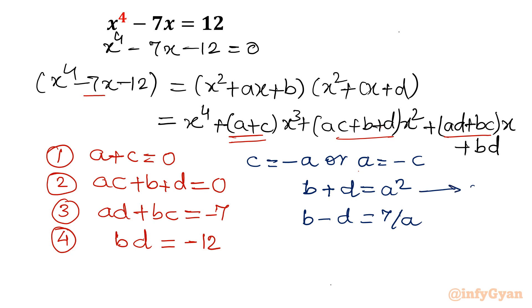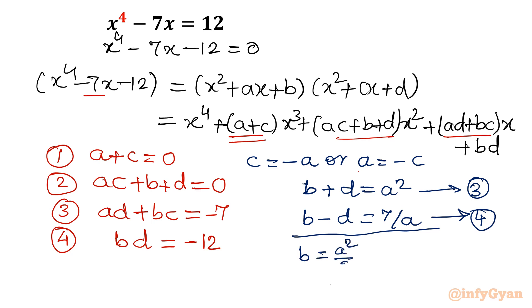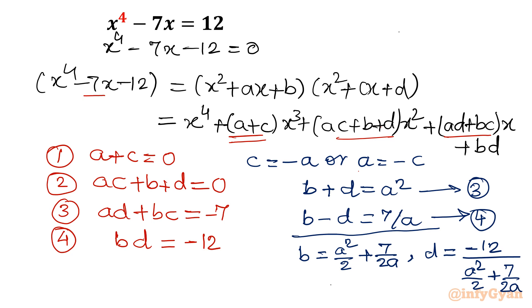Adding and subtracting equations for b + d = a² and b - d = 7/a, we get b = a²/2 + 7/(2a) and d = a²/2 - 7/(2a).